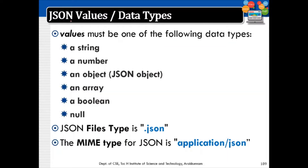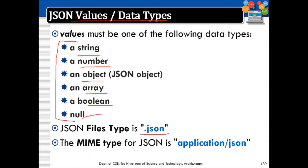Moving on to JSON values and data types. The values must be one of the following types: string, number, object, array, boolean, or null. JSON files are saved with the .json extension, and the MIME type for JSON is application/json.